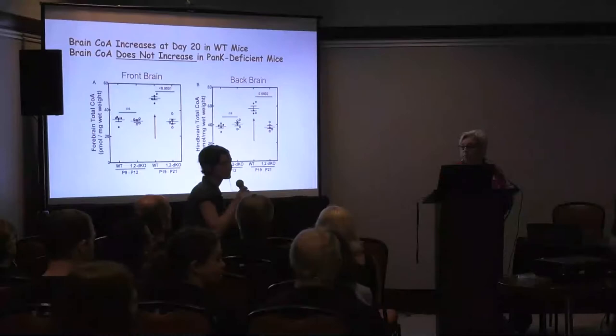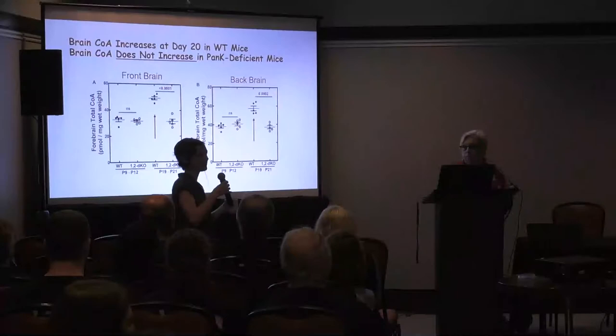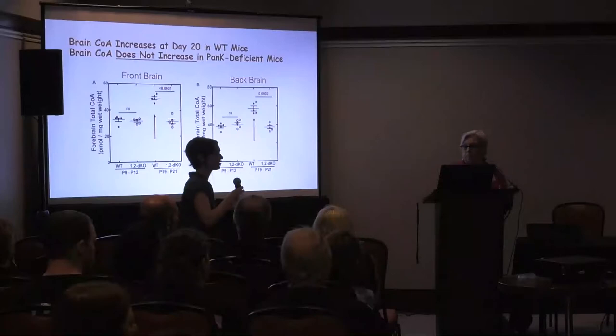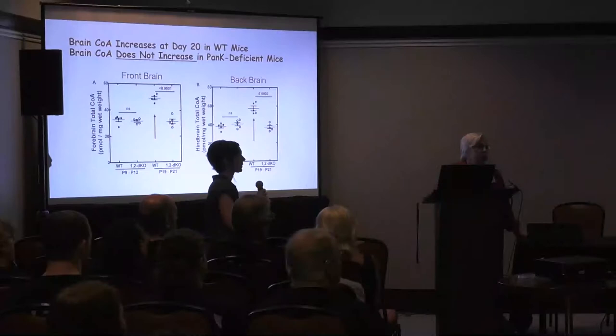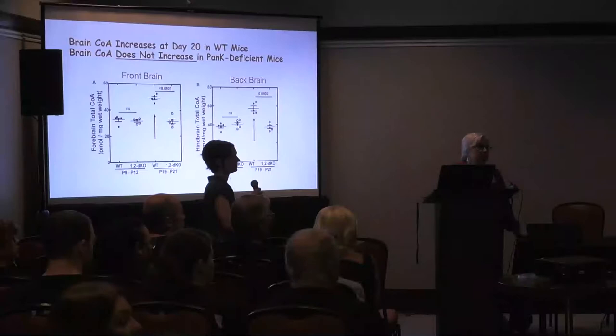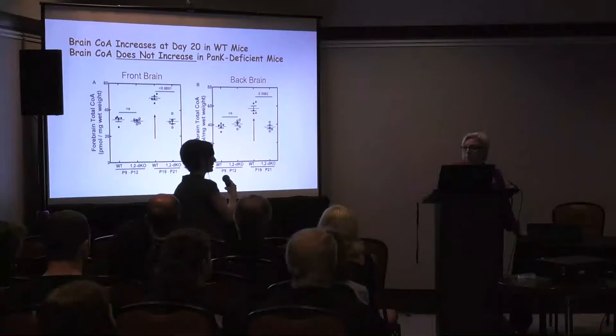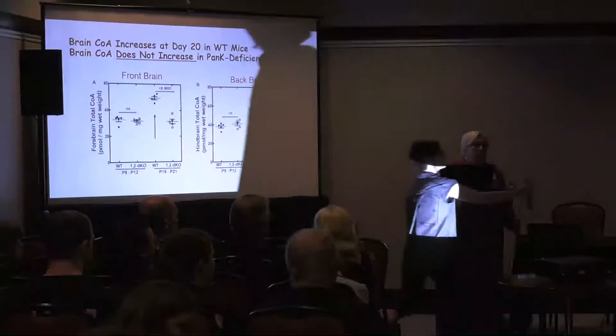Mice still have development that happens after birth, where humans are fairly well developed when they come out. Trying to equate a 10-day-old mouse to a 10-day-old human doesn't really work. A teenage mouse would be about eight weeks — you can start breeding at eight weeks. This mouse model is very severe, worse than most possible patient scenarios.